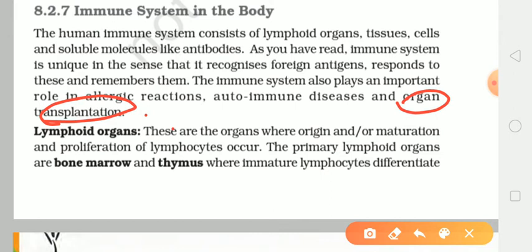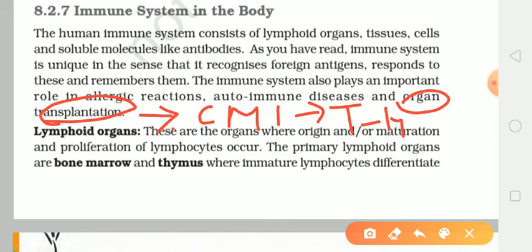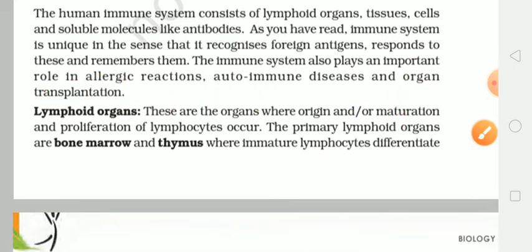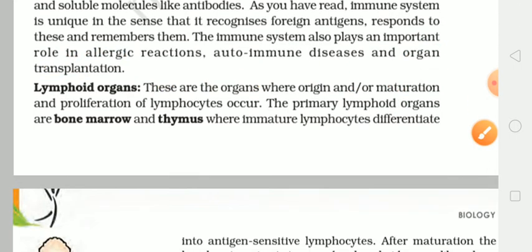Organ transplantation ke liye kaun responsible hota hai, agar voh reject ho raha hai toh, toh uske liye responsible hota hai CMI, that is cell-mediated immune response. Aur ismein kaun sa type ke T lymphocytes hote hain, toh voh hain T lymphocytes.